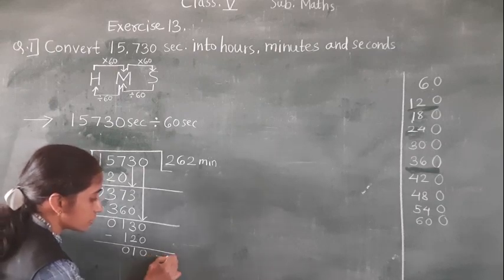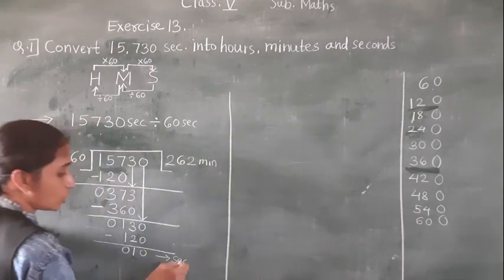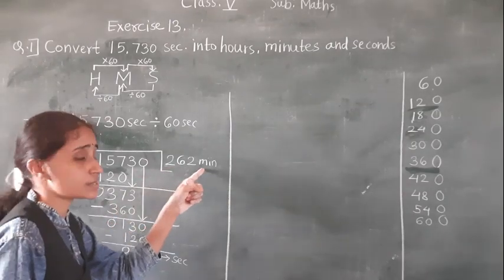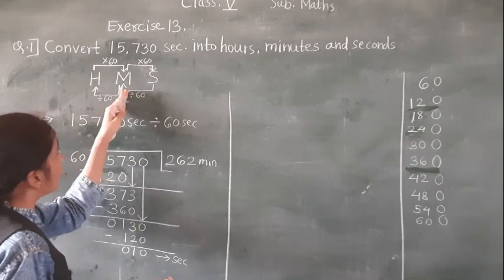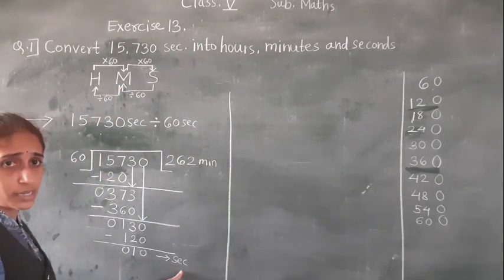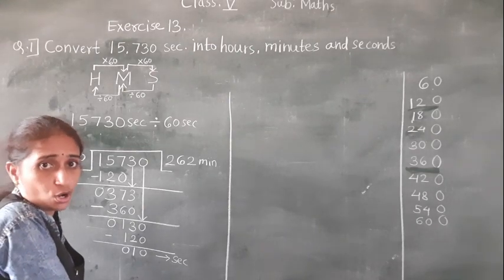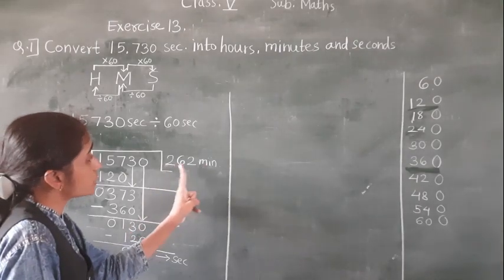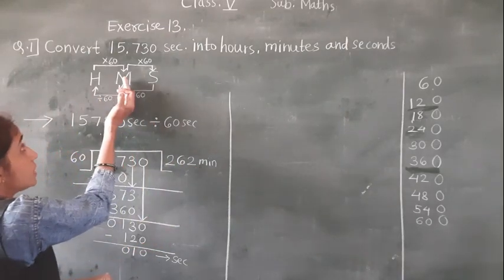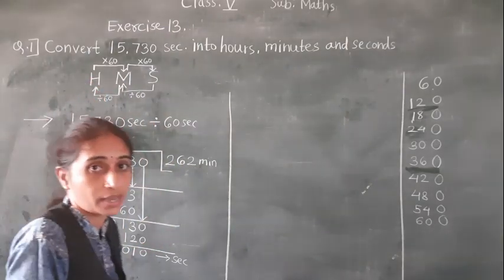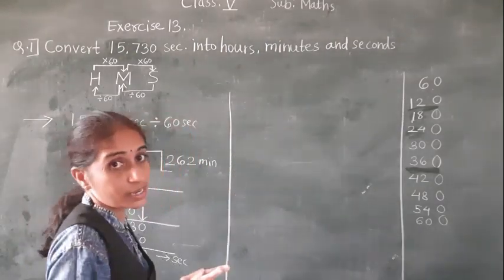The remainder is seconds. Now seconds we got. This 262 minutes — minutes we got. Minutes we are going to convert into hours. It is less than 60 seconds we got, so record the seconds. If you see the minutes: 262 minutes. We need to convert into hours with minutes, so again we divide by 60. For 262 minutes we will divide by 60.